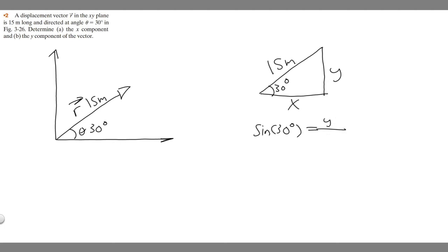And then over the hypotenuse. So what's the hypotenuse of this triangle? Well, it's going to be our vector, so 15. So the sine of 30 equals y over 15.